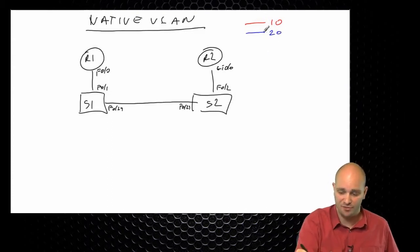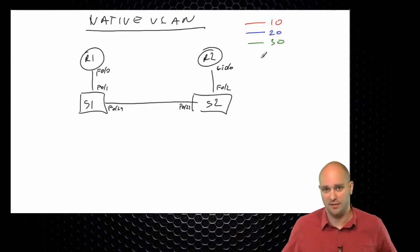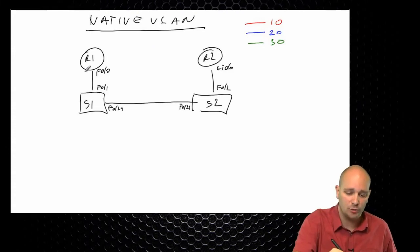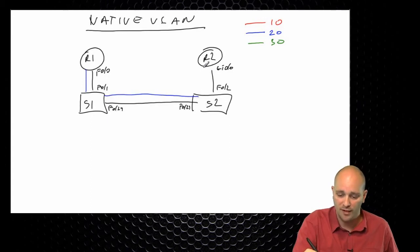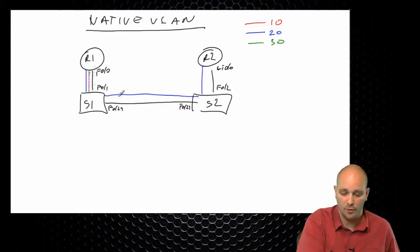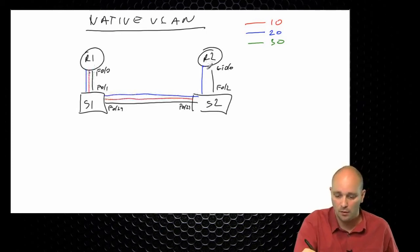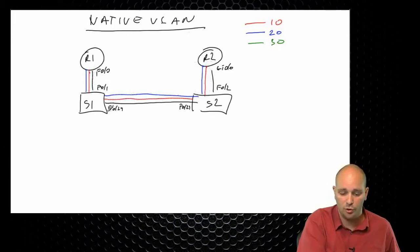I'm going to have a third VLAN — VLAN 30 — which is not going to be present on R1 and R2. My goal is to have communication between R1 and R2 in both the red and blue VLANs. Between Switch 1 and Switch 2 I'm also going to be allowing the green one.